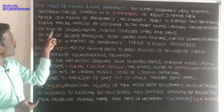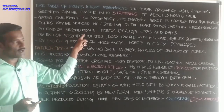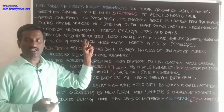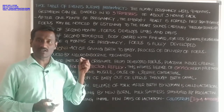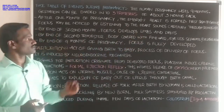By the end of the 2nd month, the fetus develops limbs and digits. Digits means fingers.